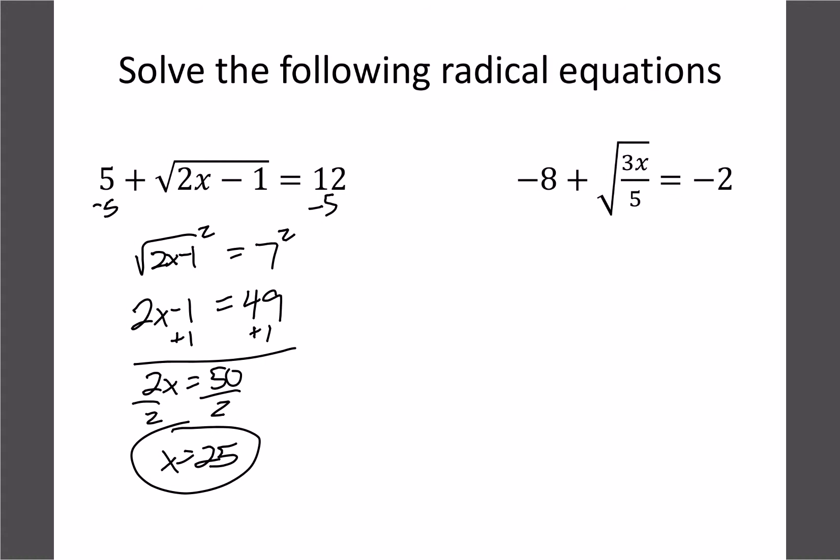Okay, this next example I got here, we've got a minus 8, so let's add that to both sides to get rid of that. So we have root 3x over 5 equals 6. Now we're ready to square both sides, so we have 3x over 5 equals 36. And to solve this one, now we want to get rid of the 5, so we'll times both sides by 5. That'll give us 3x equals 180. Then our last step is divide by 3, so 180 divided by 3 is 60. So that should be our answer for this one.